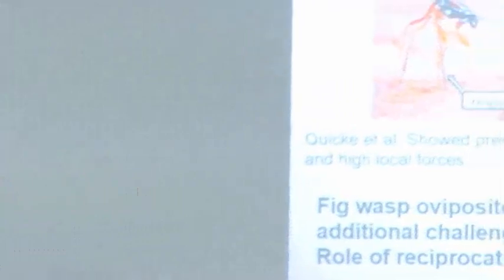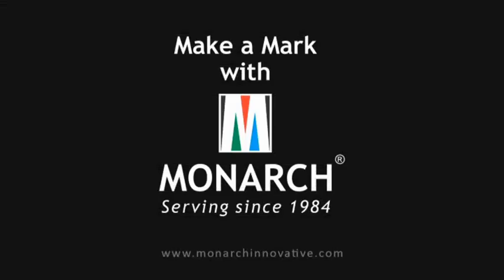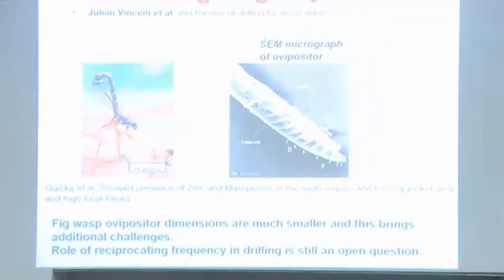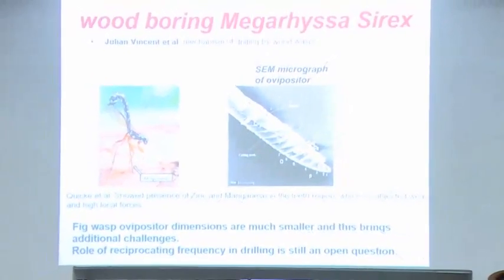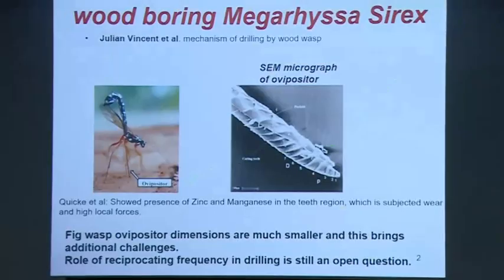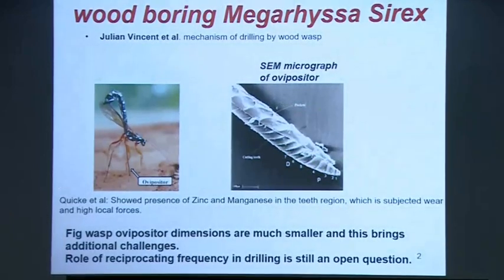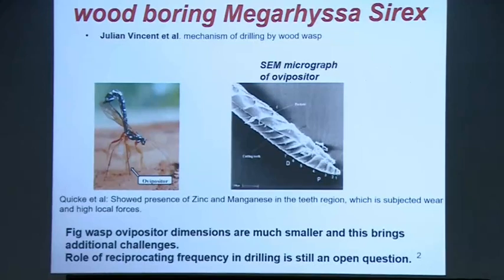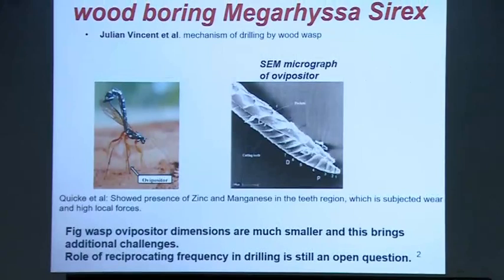When I saw this micrograph of its ovipositor — the ovipositor is this needle-like thing which is inserted inside and used to push eggs into the substrate — you can clearly think there's something about the mechanics here. People had talked about the presence of zinc and manganese in these kinds of regions, and we were really fascinated with this idea. We wanted to go and get some of these insects, except we were told we'd have to go to the foothills of the Himalayas to collect them, and we are not really trained to do this kind of thing.